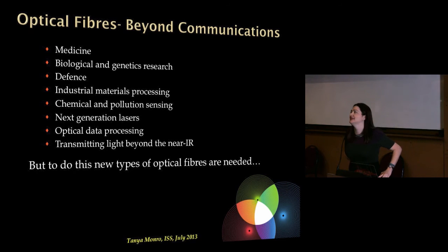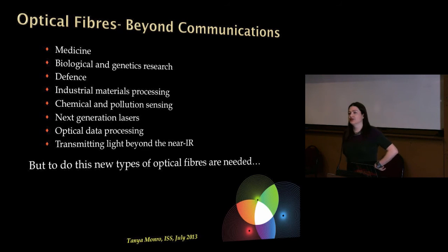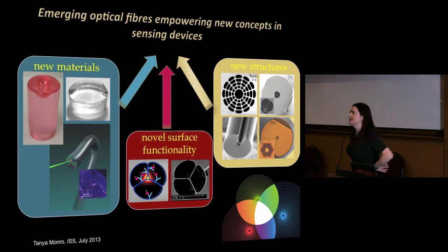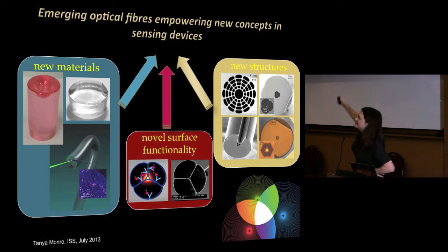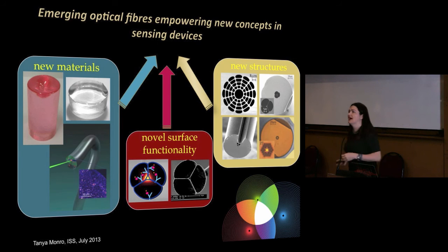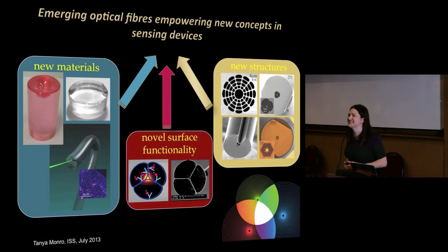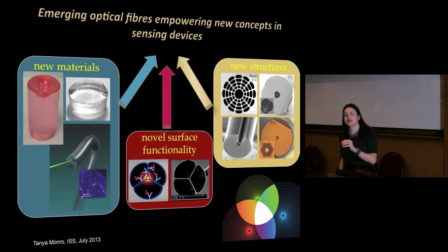If you want to do any of this, we need new kinds of optical fibres. I'm going to introduce you to three key concepts. The first is to develop new materials to make them from. Silica glass is fantastic for sending light over long distances, but there are so many more things you can do if you have access to the right material. Within our own labs we develop new kinds of glass with new optical characteristics.